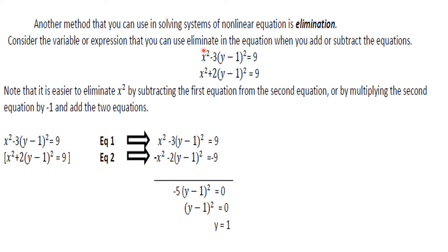So we have here an example: x squared minus 3 times the quantity y minus 1 squared equals 9, and x squared plus 2 times the quantity y plus 1 squared equals 9. It is easier to eliminate x squared by subtracting the first equation from the second equation, or by multiplying the second equation by negative 1 and adding the two equations.